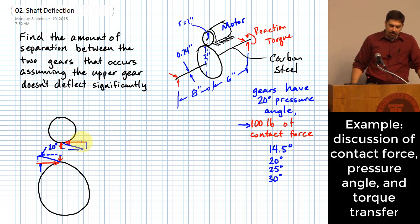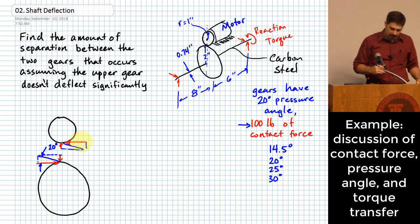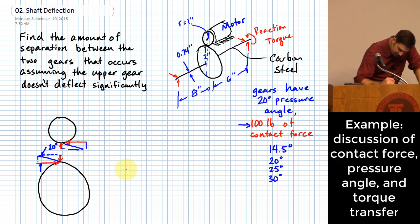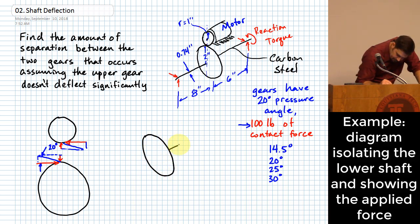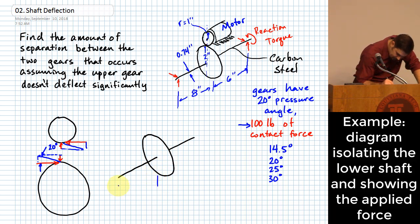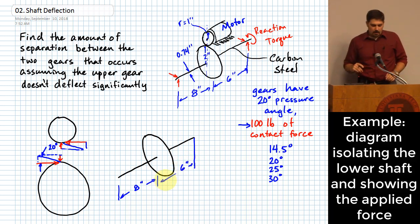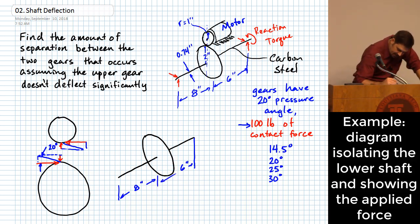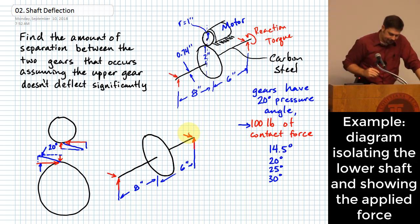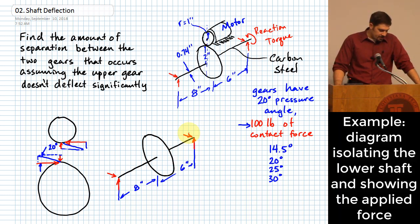I felt I should mention this background because when you do the problems I assign, I will usually specify pressure angles using one of those standard numbers - not by accident. I'm showing you numbers that exist in real gear standards. Let me redraw the shaft diagram to make it less ambiguous. Here's the gear with an eight-inch spacing on one side and six inches on the other, with reaction forces at the bearings.